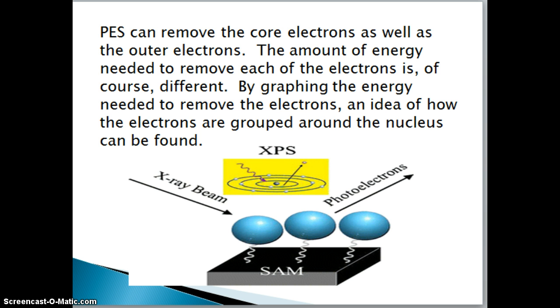By graphing the amount of energy that we need, we can see how many electrons are core electrons, how many electrons are in the midpoint between the outer valence and the core electrons, and then how many electrons are in the valence electrons.